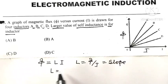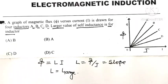So L is equal to the slope. Self-inductance of that inductor is large which has greater slope.